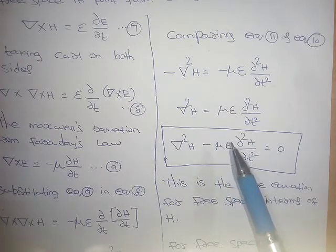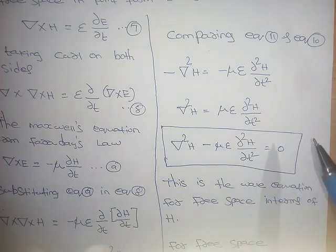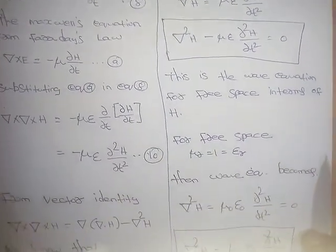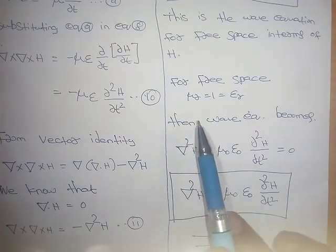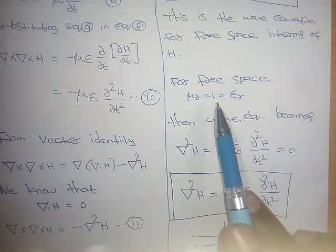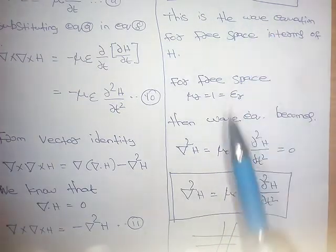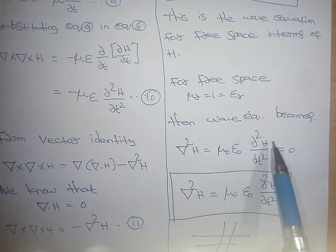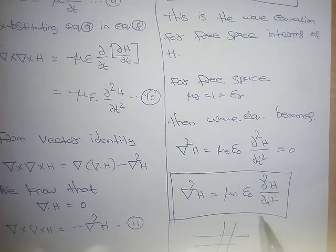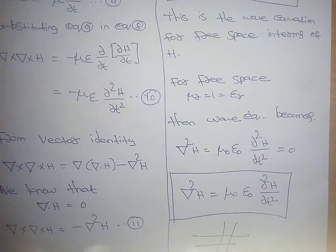Note that μ equals μ₀μᵣ and ε equals ε₀εᵣ. For free space, μᵣ and εᵣ are both equal to one, so the equation becomes del²H equals μ₀ε₀ d²H/dt², which is the wave equation in terms of H for free space.